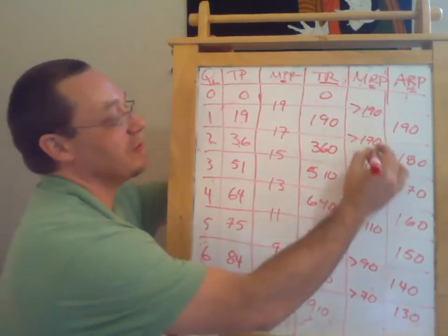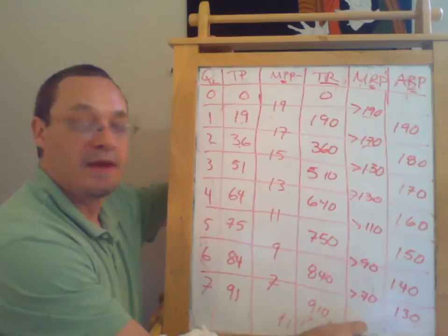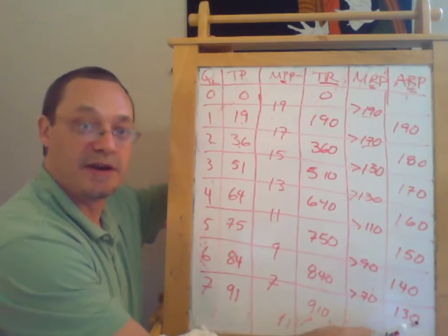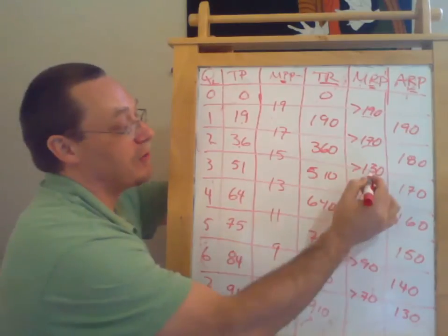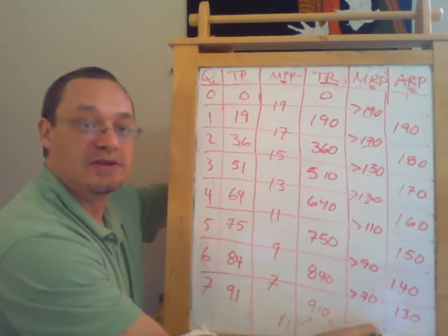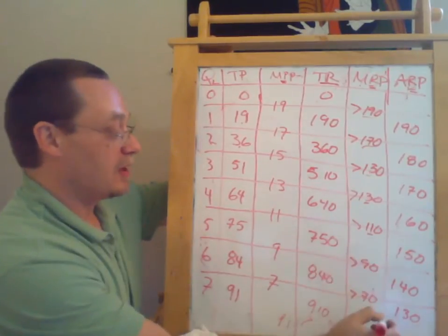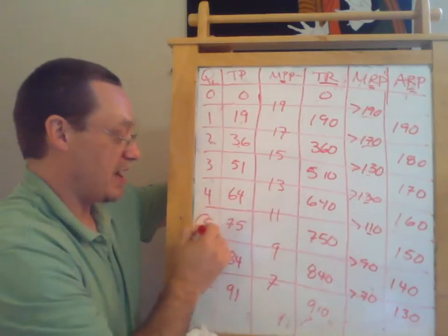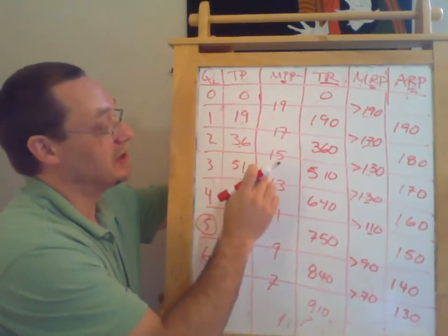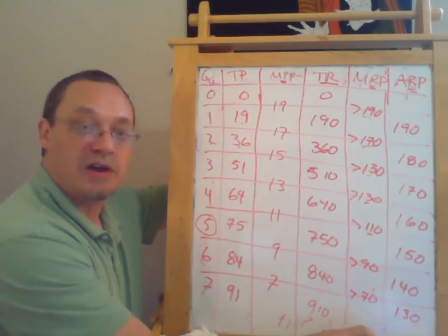The second worker produces $170 worth of output, and if hired for $100, the firm makes itself $70 better off. And so on down the line — any worker that produces more than $100 worth of output is profitable to hire. So this firm wants to hire five workers if the price of output is $10 and workers are each paid a wage of $100.